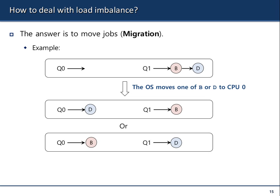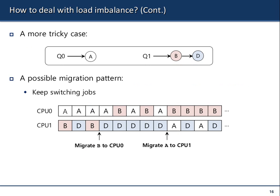One way to solve this is migration. The operating system should be able to check which queue is empty and which has many processes, and move some of the processes to the lighter queue — based on the algorithm that the operating system is implementing. A more tricky case involves some interleaving: you can migrate processes to CPU zero, then migrate to CPU one — juggling processes across the different CPUs.